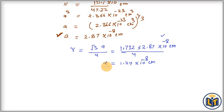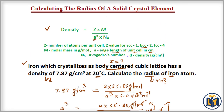In summary, to calculate the radius of the element, I first calculated the length of the unit cell using the density formula, then used the BCC relation between the unit cell length and the radius, and applied the formula to calculate the radius of the iron atom.